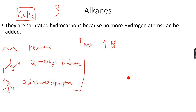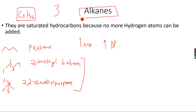Fossil fuels are formed by the remains of dead plants and animals under the sea. These are essentially alkanes — we extract crude oil from the ocean and what we get is a mixture of alkanes with different numbers of carbon atoms.